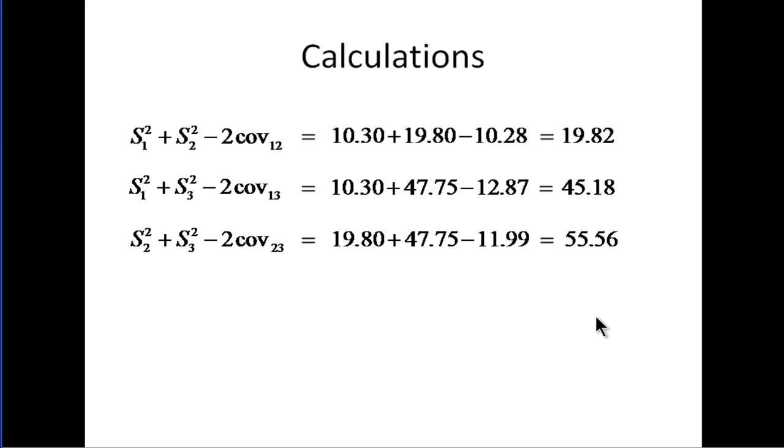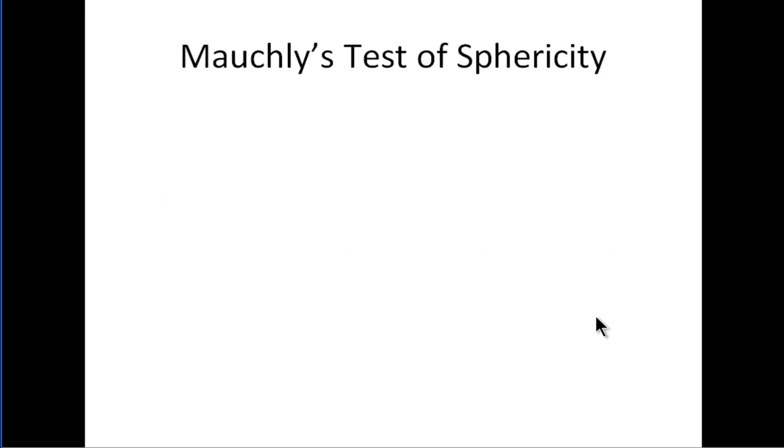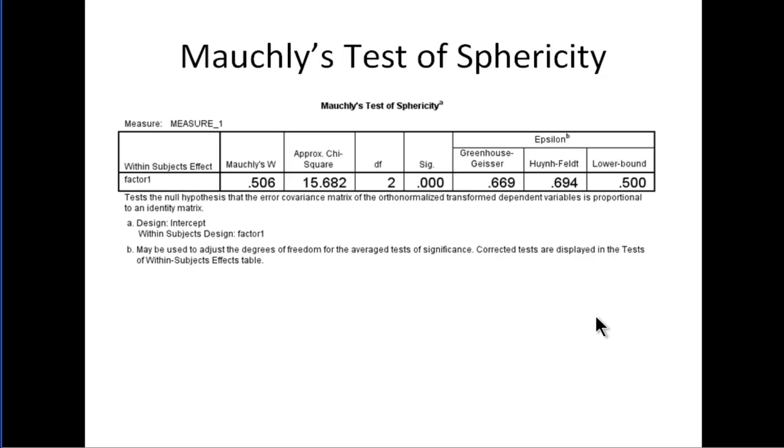We use something called Mauchly's test of sphericity to test the hypothesis that the sum of the variances minus two times the covariance is equal across all possible comparisons. In this case here, testing it through SPSS,